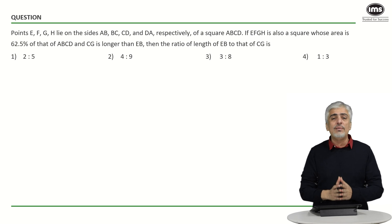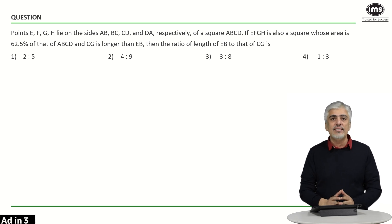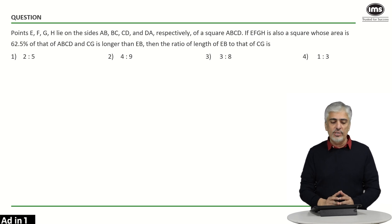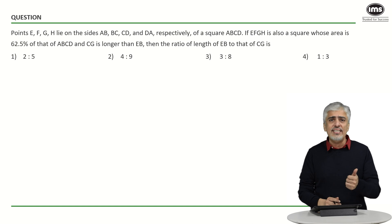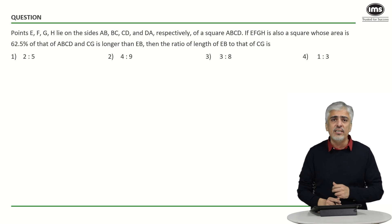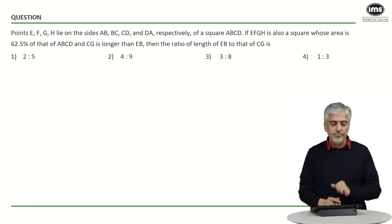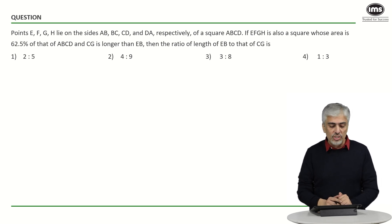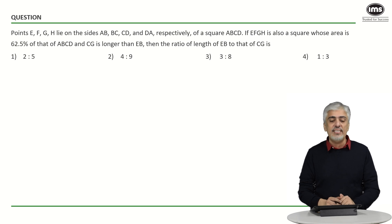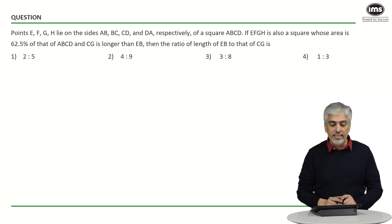Hi everyone, welcome to the best of CAT series from IMS. Let us have a look at the next question in geometry. It is a slightly difficult question, not as easy as the earlier ones. They are telling us points E, F, G, H lie on sides AB, BC, CD, and DA respectively of a square ABCD.